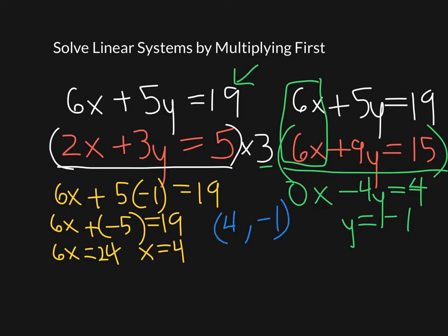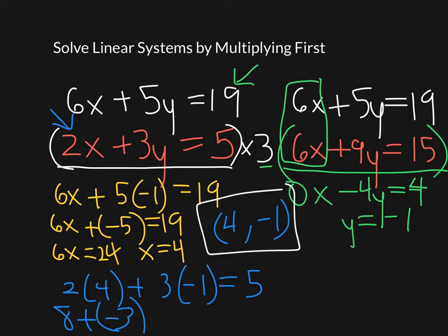But I've got to check it into this equation as well. So let's see if that works. So 2 times 4 plus 3 times negative 1 equals 5. So this is going to be 8 plus negative 3 equals 5. And that's a true statement. So this is true for both of the equations. So it's the solution for both.